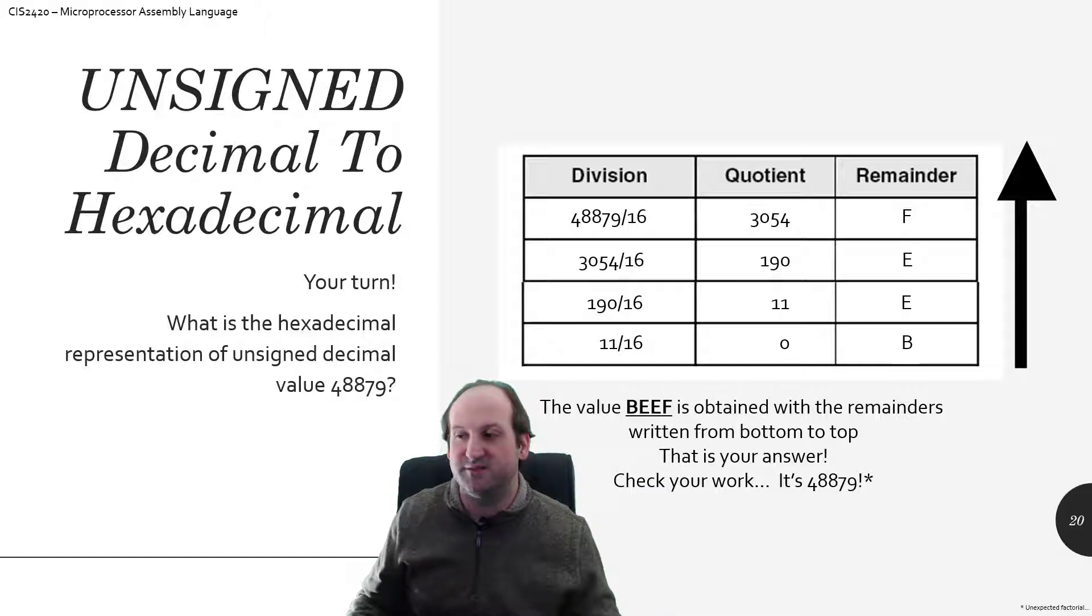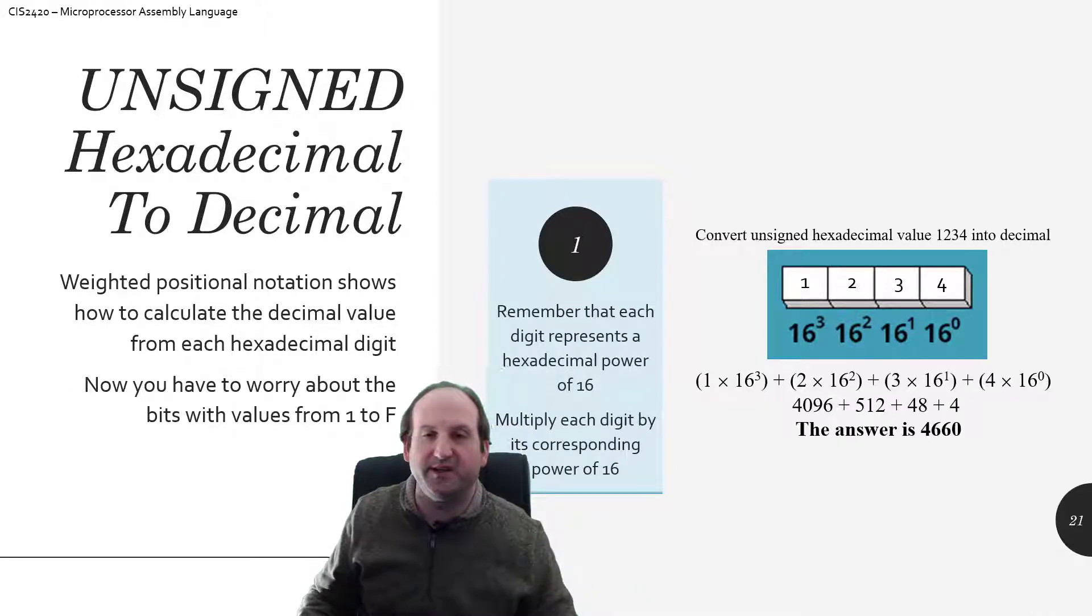BEEF is 48,879 in hexadecimal, and the next slides will show you that we can go exactly in reverse and work our way back from BEEF to 48,879. The arithmetic is a little trickier now, going from hexadecimal back to our normal base 10 decimal system. But other than the arithmetic being difficult, it's still one algorithm. You pretty much do the same thing over and over and over again, and as long as your arithmetic is correct, you are absolutely certain to have the correct result.